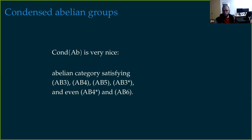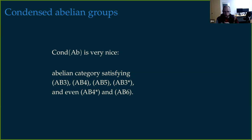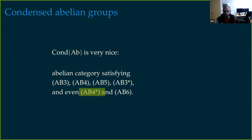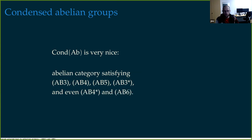If you look at abelian group objects in condensed sets, or take abelian sheaves, this will be an abelian category. But it's not just an abelian category — it satisfies many nice properties that Grothendieck listed in his famous Tôhoku article. In the case of condensed abelian groups, it even satisfies two additional properties beyond the usual ones, making it a particularly nice category.